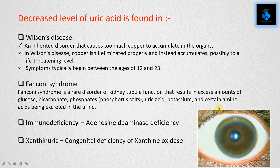Now let's see the decreased level of uric acid. These are found in Wilson's disease, which is an inherited disorder that causes too much copper accumulation in the organs. In Wilson's disease, copper isn't eliminated properly and instead accumulates, possibly to a life-threatening level. Symptoms typically begin between the ages of 12 and 23.